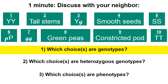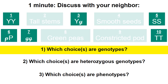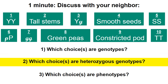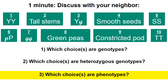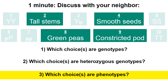For number one, which choices are genotypes? The answers are one, three, five, six, seven, and ten — all the letter combinations are genotypes. For number two, which choices are heterozygous genotypes? There are only two answers: number three and number six. Typically you put the capital letter first, but anytime there's a combination of one dominant and one recessive allele, that's a heterozygous genotype. For number three, which choices are phenotypes? The answers are two, four, eight, and nine — the physical descriptions are phenotypes.